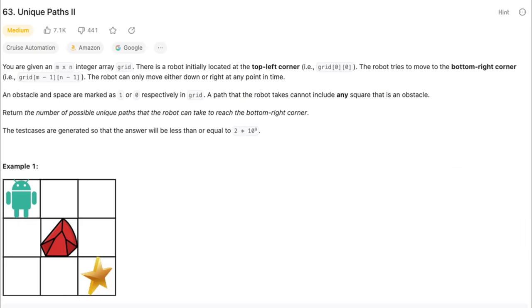Let's try another example. You are given an m by n integer array grid. There is a robot initially located at the top left corner. The robot tries to move to the bottom right corner. The robot can only move either down or right at any point in time. An obstacle and space are marked as 1 or 0 respectively in grid. A path that the robot takes cannot include any square that is an obstacle.